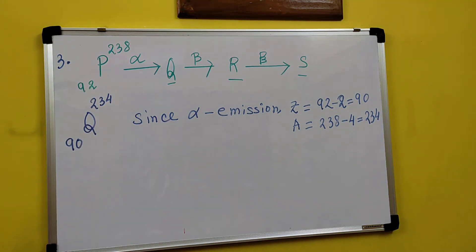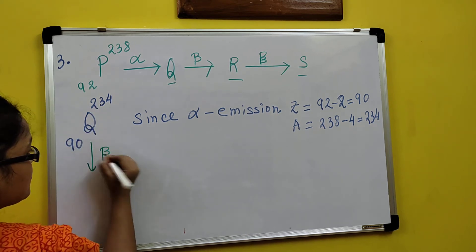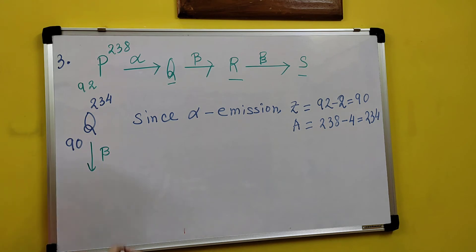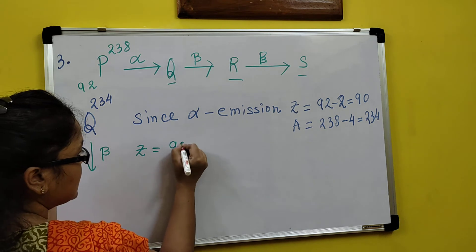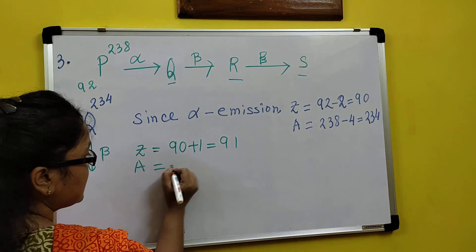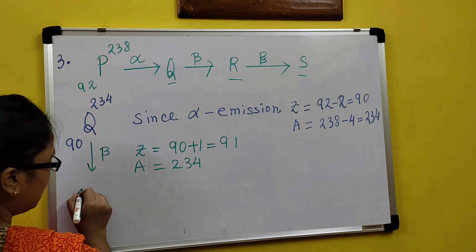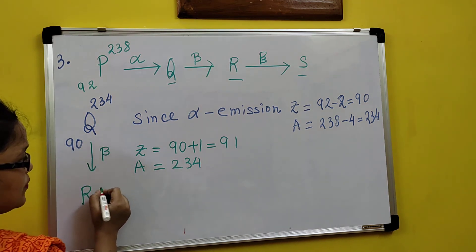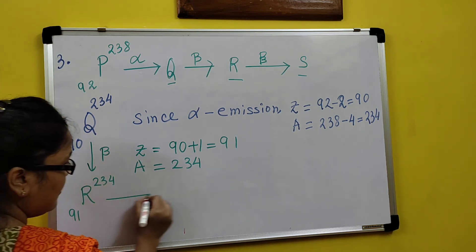After alpha emission we are having a beta emission. Right now Q is (234, 90). Beta particle means Z will be whatever right now plus 1, so 90 plus 1 — Z will be 91. And mass number: since beta emission there is no change in mass number, so it remains 234. So R will be (234, 91). Done.